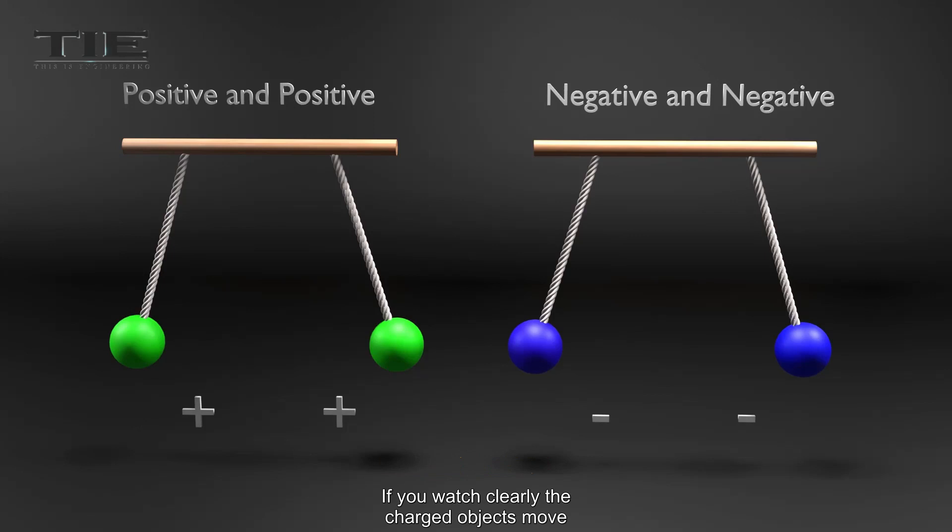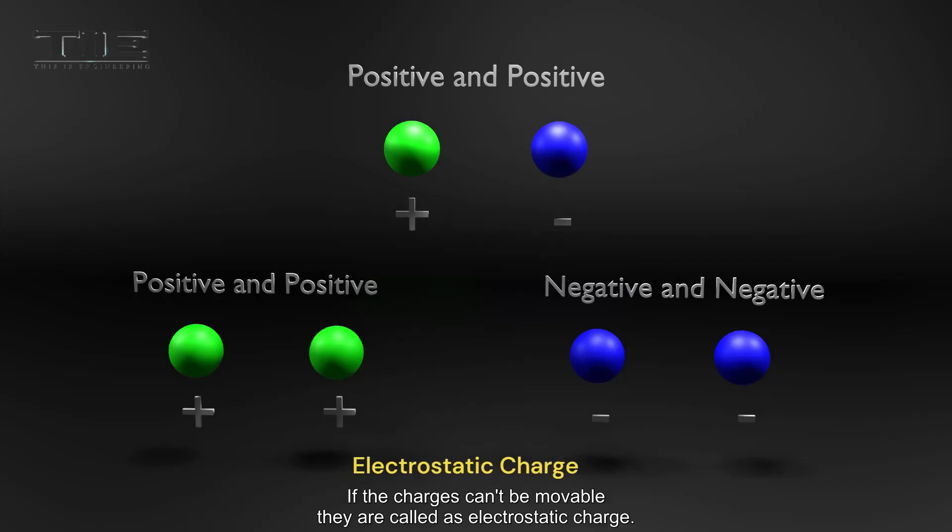If you watch clearly, the charged objects move. This is the very important point in electrostatic charge. If the charges can't be movable, they are called electrostatic charge.